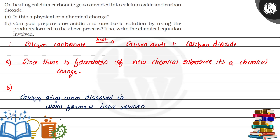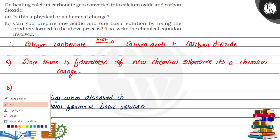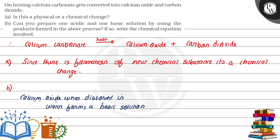And the reaction for this part will be CaO, calcium oxide, plus H2O water, gives Ca(OH)2, calcium hydroxide. Now this will be our reaction for basic solution.